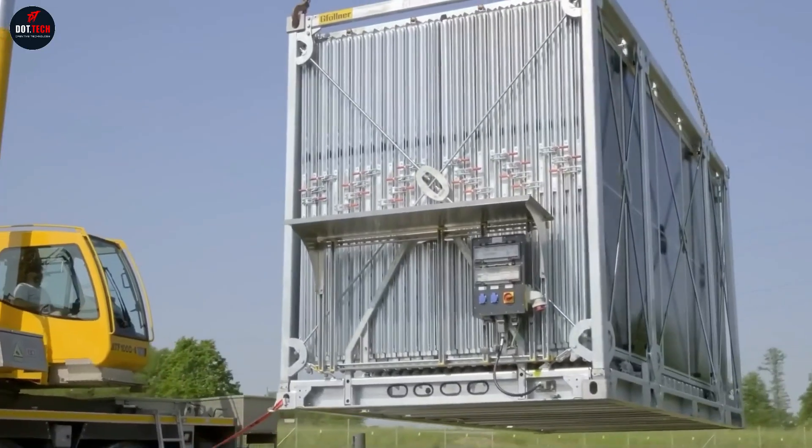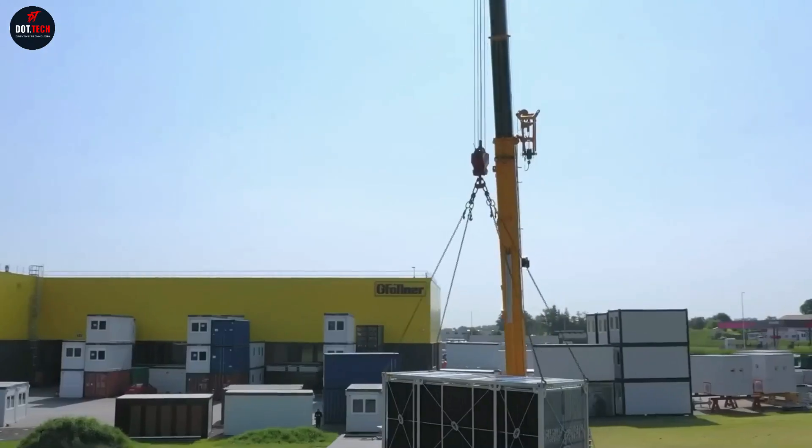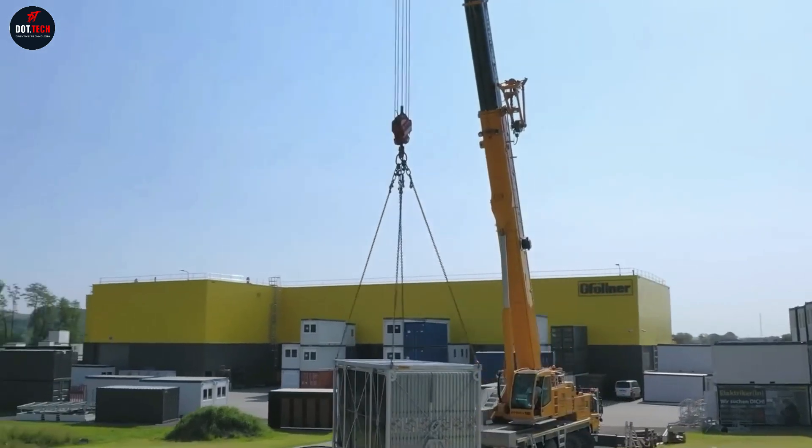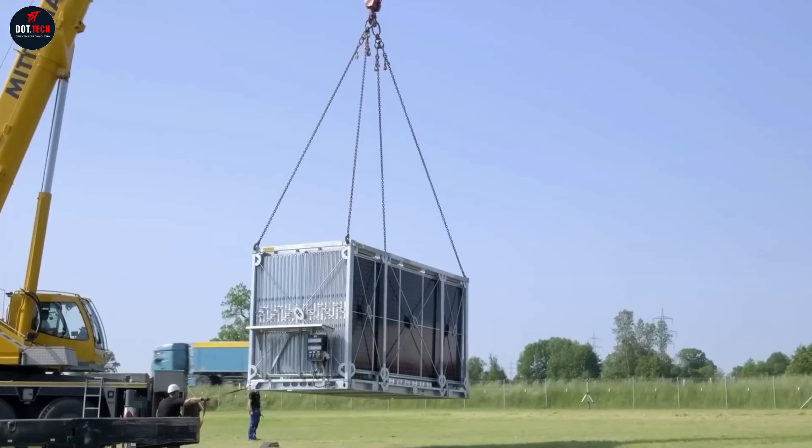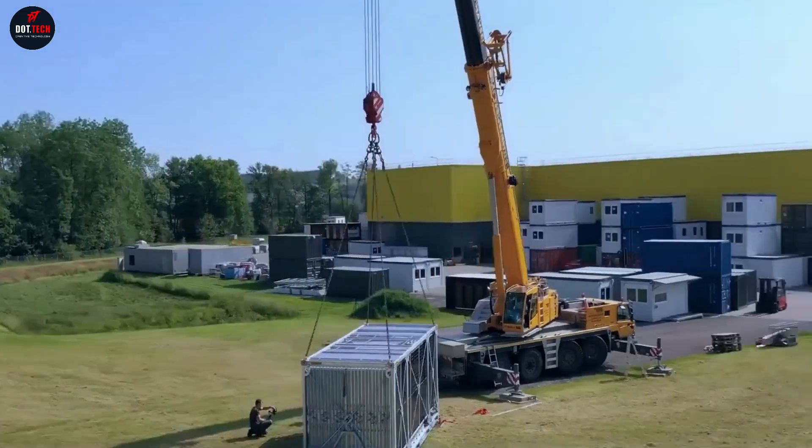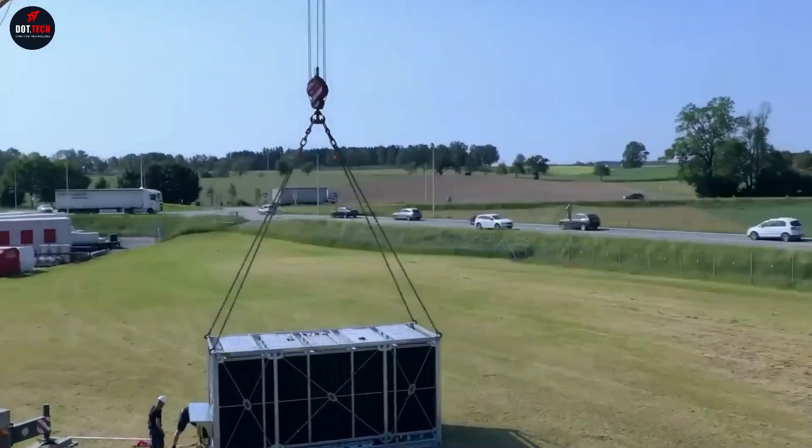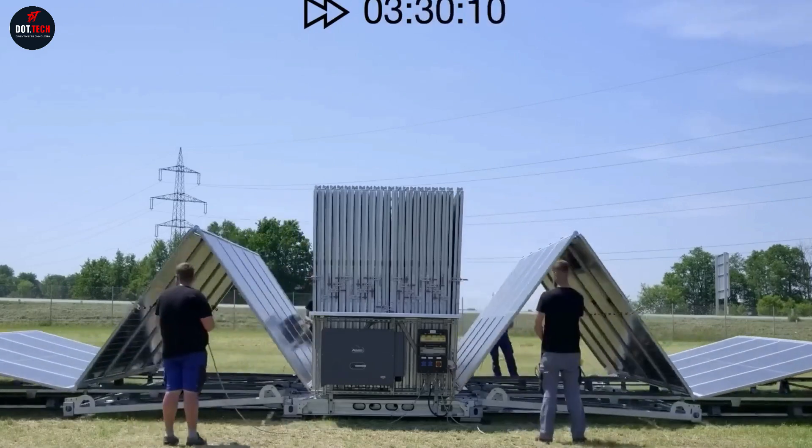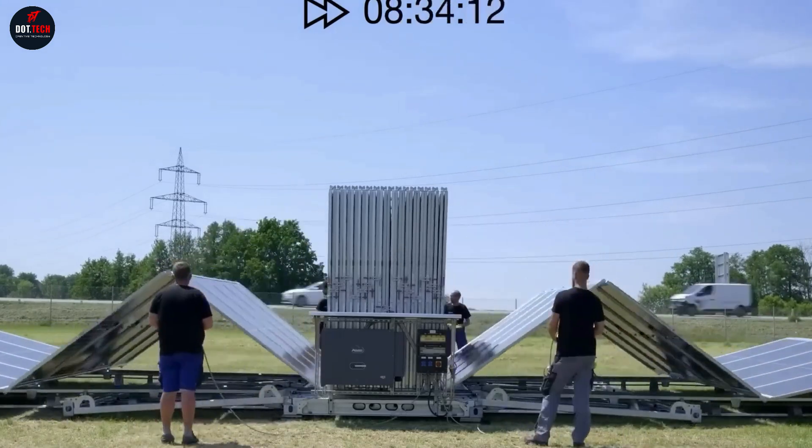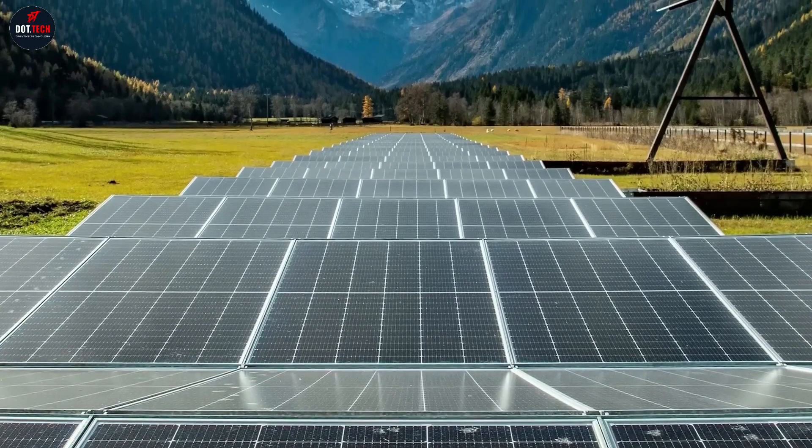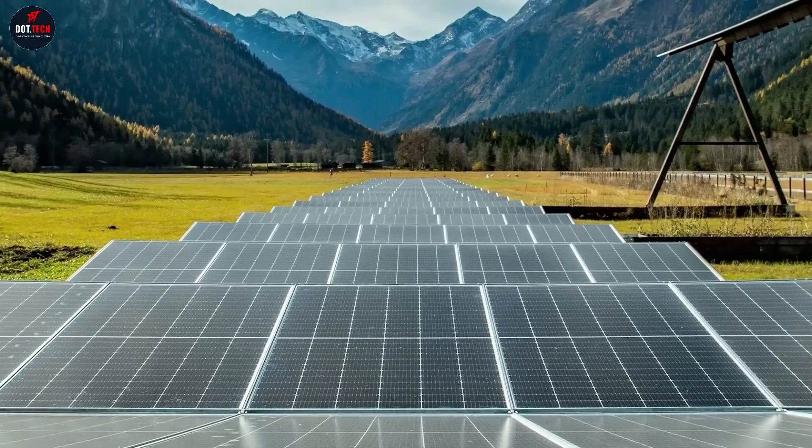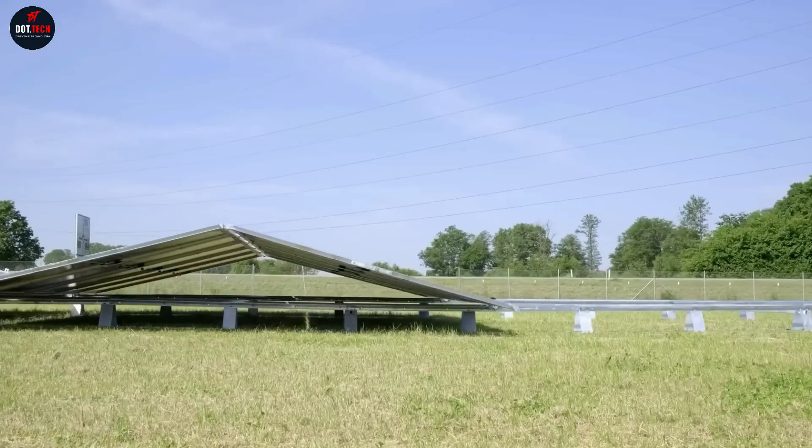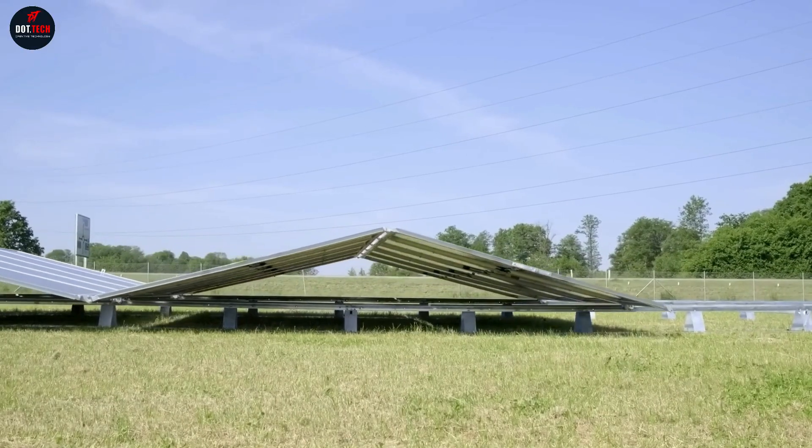In the folded state, such a system has the dimensions of a standard 20-foot shipping container and does not require special transportation. Upon arrival at the site, the structure is placed on the ground using a forklift or crane and automatically unfolds like an accordion to its working state. The length of the panels in the unfolded state is 394 feet and the total power is 140 kilowatts.